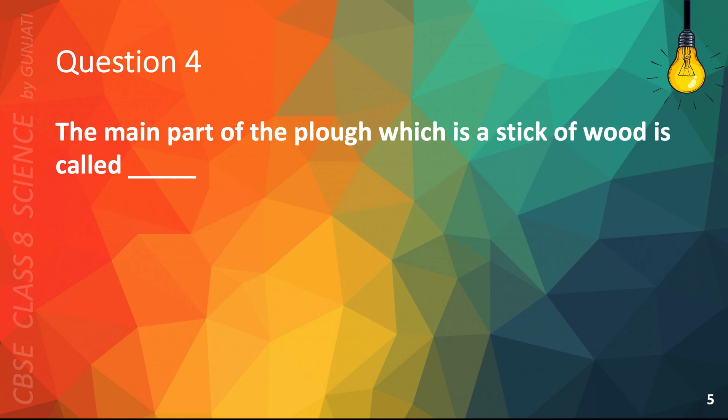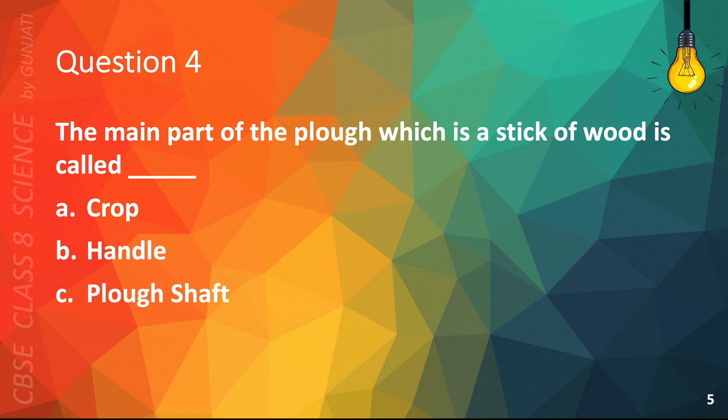Question 4. The main part of a plow, which is a stick of wood, is called A. Crop, B. Handle, C. Plowshaft, or D. Paper. The correct answer is C. Plowshaft.